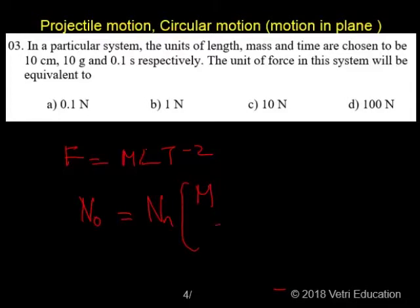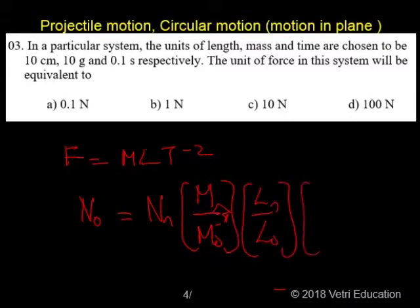According to this formula, it is M in the new system by M in the old system, L in the new system by L in the old system, T in the new system by T in the old system to the power minus 2.